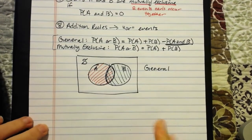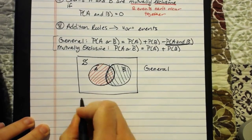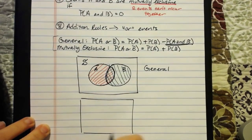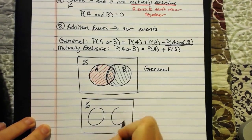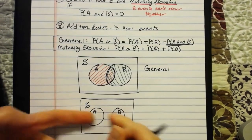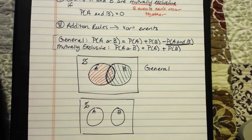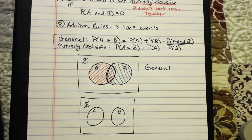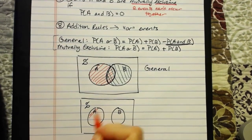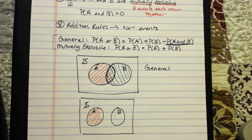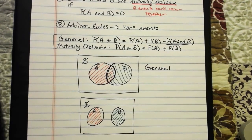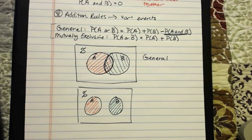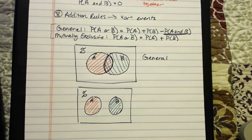For mutually exclusive events, the reason we don't need that subtraction is because if two events are mutually exclusive within the sample space, it means they don't overlap — they can't both occur at the same time. So there's no overlap in the middle. I can safely take probability of A and add probability of B without subtracting anything off, because there isn't any overlap. That's where the addition rules come from.